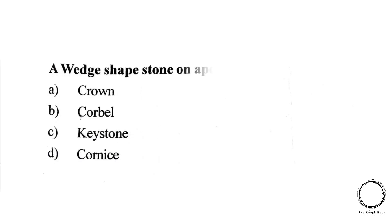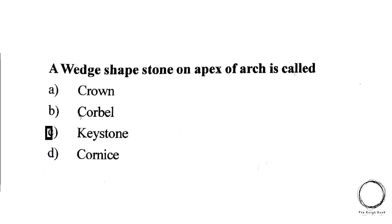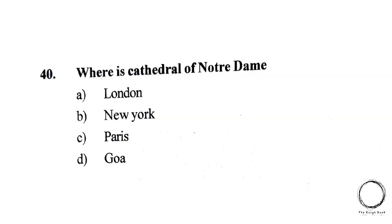Next question: a wedge-shaped stone on the apex of an arch is called A. Crown, B. Corbin, C. Keystone, D. Cornice. The right answer is C, Keystone.